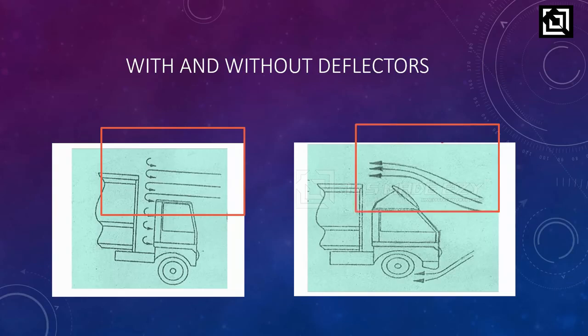Now, if we have a deflector and the flow goes along the surface, we can see that the drag is much less. This leads to better fuel efficiency. The same animation clearly demonstrates the difference that deflectors make.